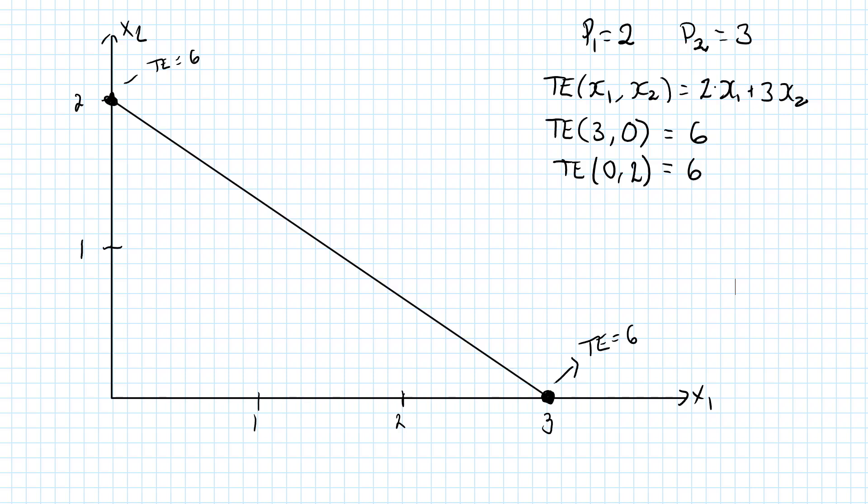Here is the line. For example, if I consume 1 unit of good 2, we can see that if I also then consume 1.5 units of good 1, the total expenditure will be 6. So TE of 1.5 and 1 is also 6, which is true since 2 times 1.5 plus 3 times 1 is indeed 6. Similarly, every point on this straight line will have a total expenditure of 6.